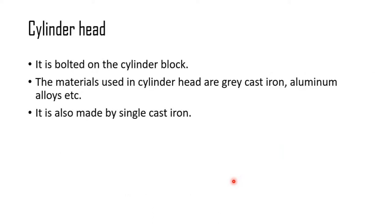The cylinder head is basically on top of the cylinder block. It is bolted on the cylinder block and consists of the input valve, output valve, or input and output ports. It also consists of a spark plug — and a nozzle in the diesel engine. It is made by single cast iron; the materials used are grey cast iron or aluminium alloy.